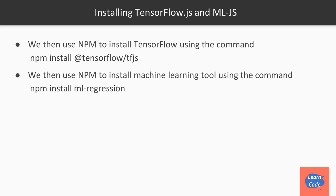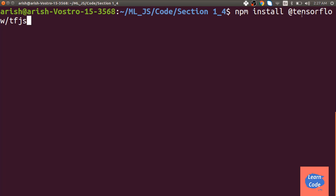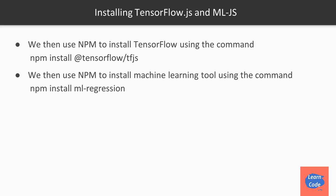To install TensorFlow.js and the machine learning tools libraries, we use npm install. For TensorFlow, all functionality is packed under tensorflow/tfjs, so enter: npm install @tensorflow/tfjs. For machine learning tools, most algorithms are separate packages — for example, to install regression, enter: npm install ml-regression. If you want random forest, you install the random forest library separately.